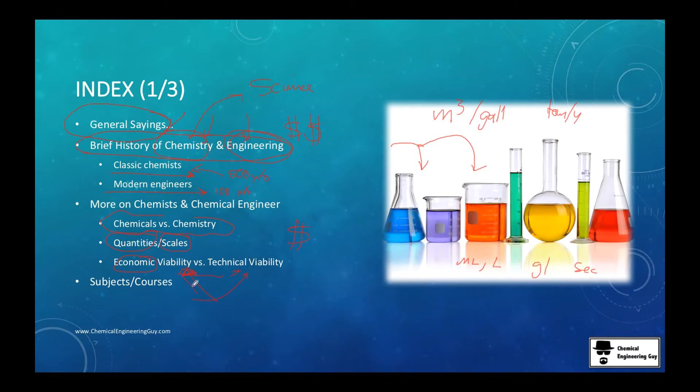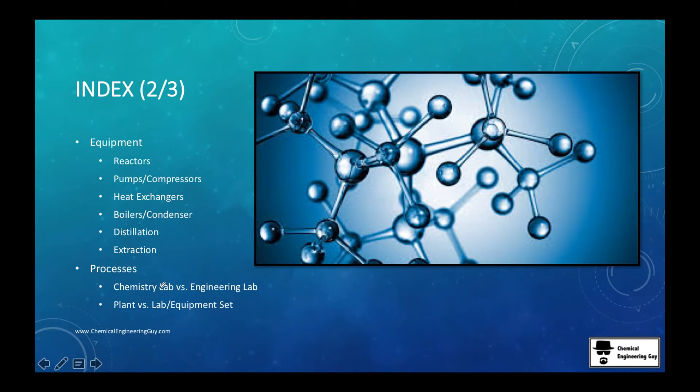Then we go and check out the different subjects and courses. We start talking about the different equipment you will see in the lab of a chemist and in the lab of an engineer - reactors, pumps, compressors, heat exchangers, boilers, distillations, extractions, pipings, storages, materials and so on.